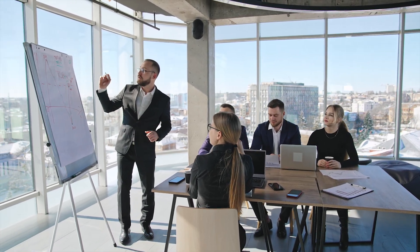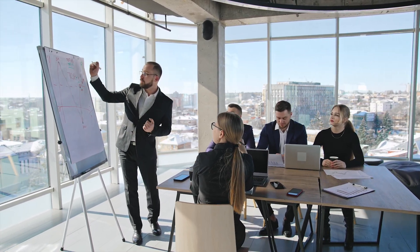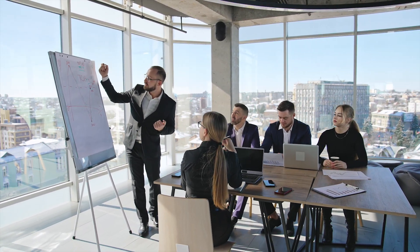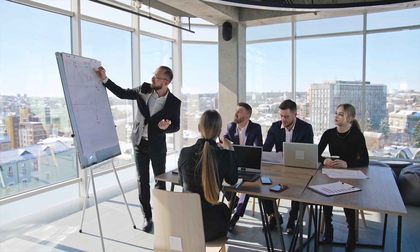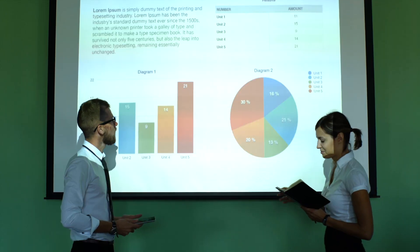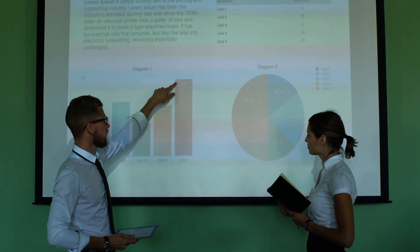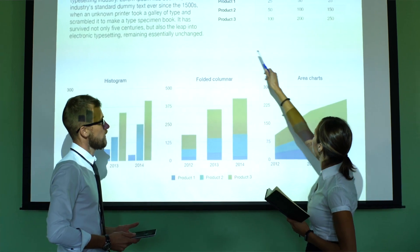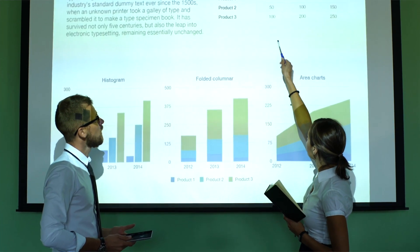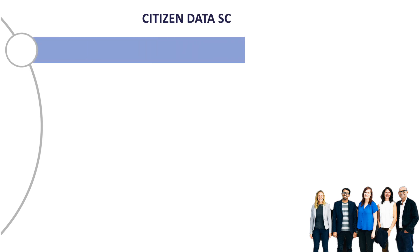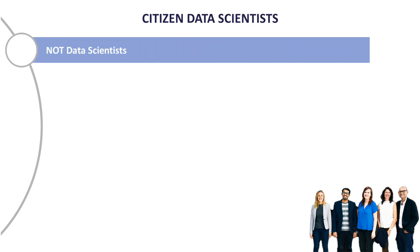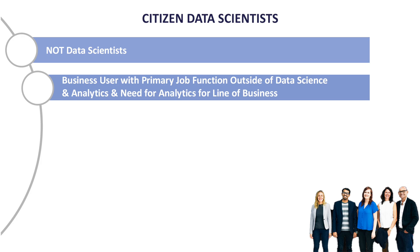Smart and Insights is a software-as-a-service solution designed to support citizen data scientists. Business users with no data science background can create, use, and share predictive models in minutes. A citizen data scientist is not a data scientist, but rather a business user who improves results by performing analytics as part of their role.